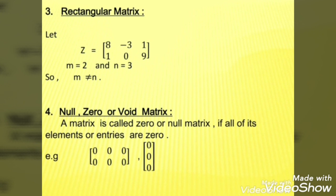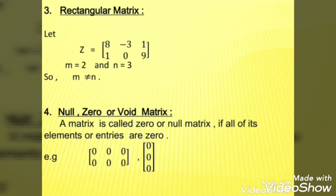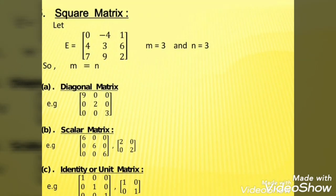The next type is null matrix, also known as zero matrix or void matrix. It means that if all the elements are zero, that matrix is a null matrix.